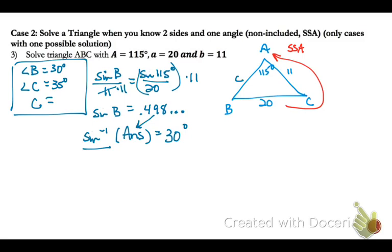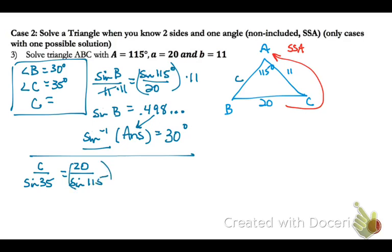Now go back to the law of sines to solve for side C. Put the side length on top since that's what we're solving for: C over the sine of 35 equals 20 over the sine of 115. Multiply by the denominator: 20 divided by the sine of 115, times the sine of 35. So C is 13.